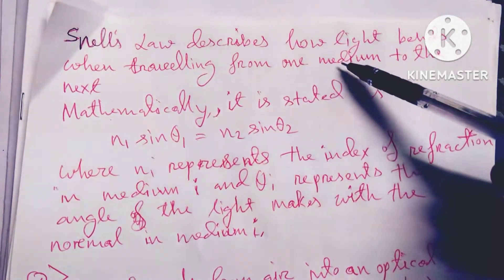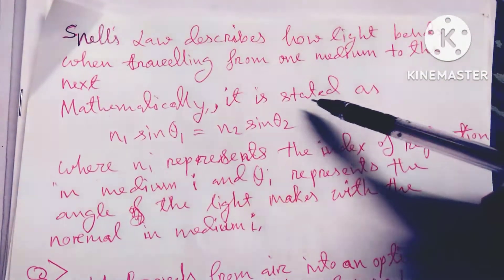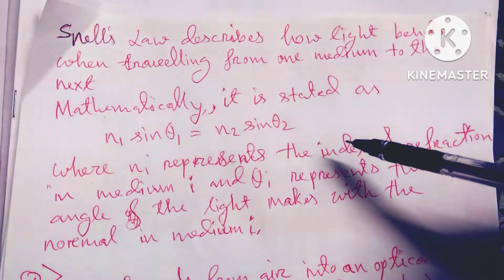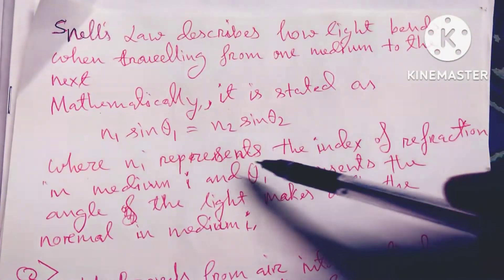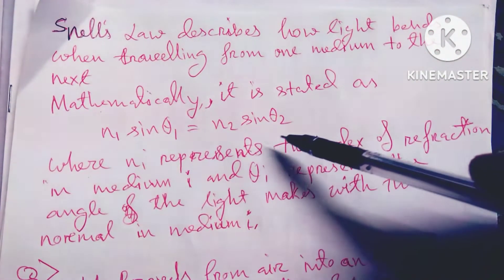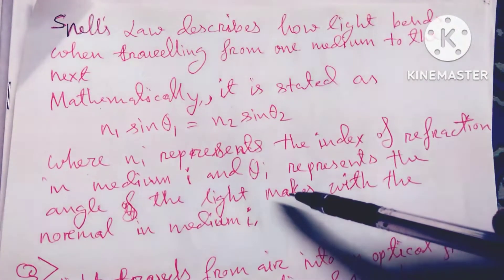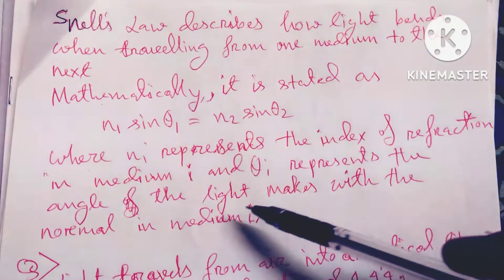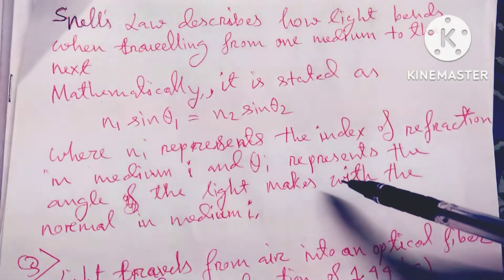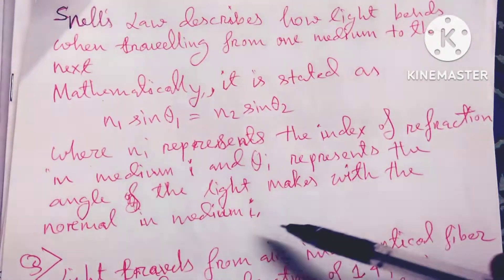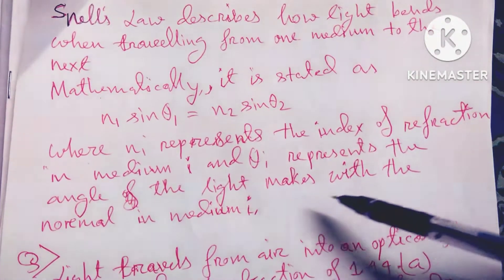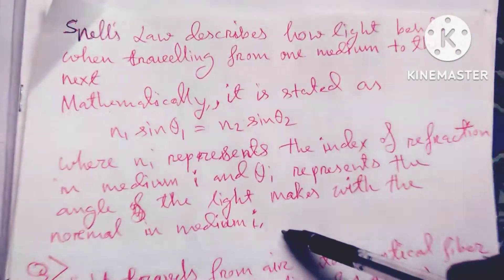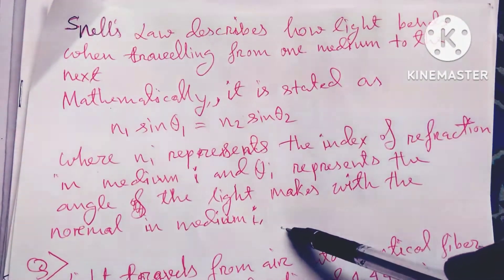Snell's law describes how light bends when traveling from one medium to the next. Mathematically it is stated as n1 sin(θ1) = n2 sin(θ2), where n1 represents the index of refraction in medium 1 and θ1 represents the angle the light makes with the normal in medium 1.